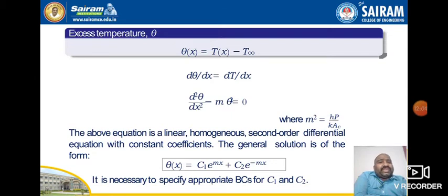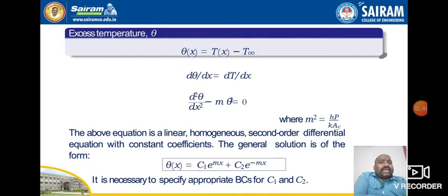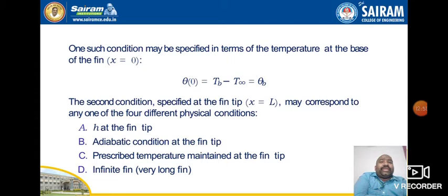The above equation d²θ/dX² − m²θ = 0 is a linear homogeneous second-order differential equation with constant coefficients. From differential equations studied previously, the general solution is: θ(X) = C1·e^(mX) + C2·e^(−mX). We need to find the arbitrary constants C1 and C2 by applying boundary conditions.